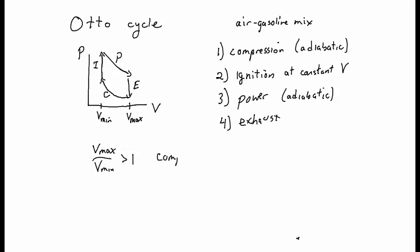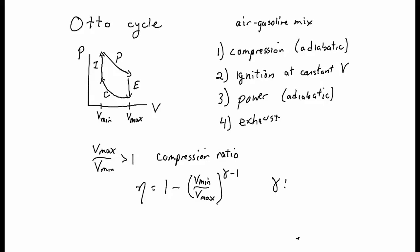If we call the maximum volume V_max and the minimum volume V_min, then the ratio of those two — V_max to V_min — is called the compression ratio. The efficiency of this engine can be shown to equal 1 minus the inverse of the compression ratio (V_min over V_max) raised to the gamma minus 1 power, where gamma is the adiabatic exponent. It depends on what type of gas we're using.